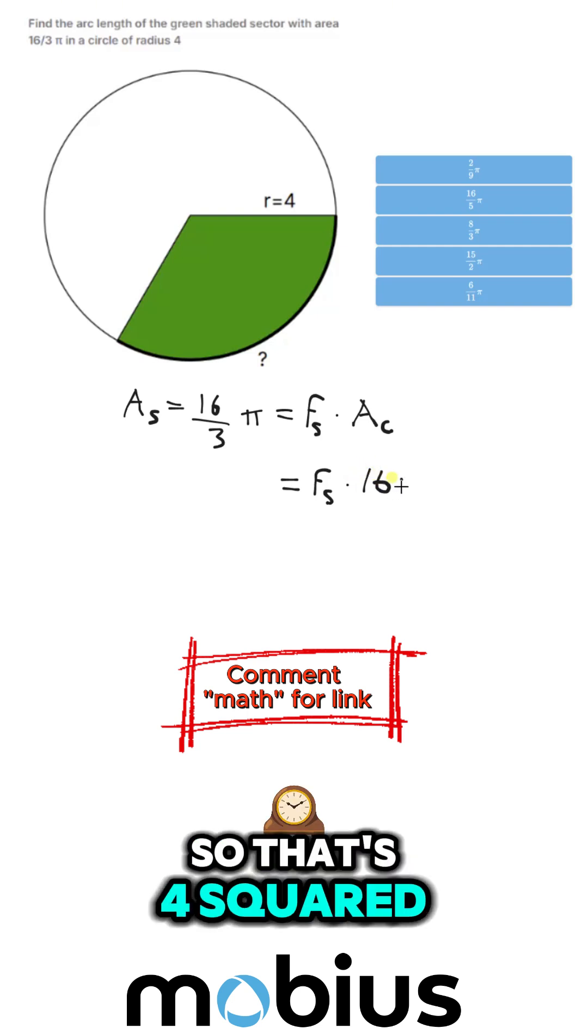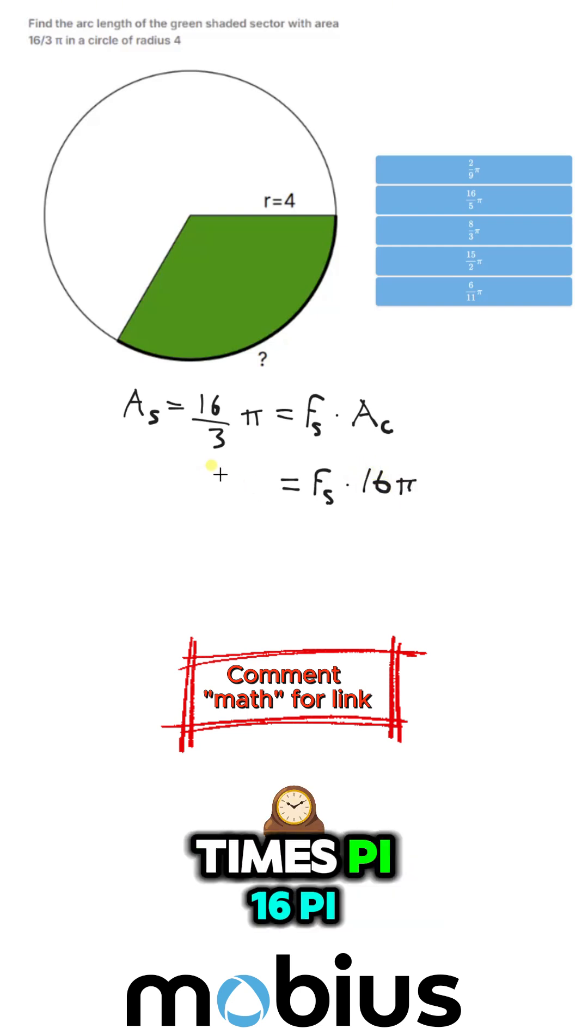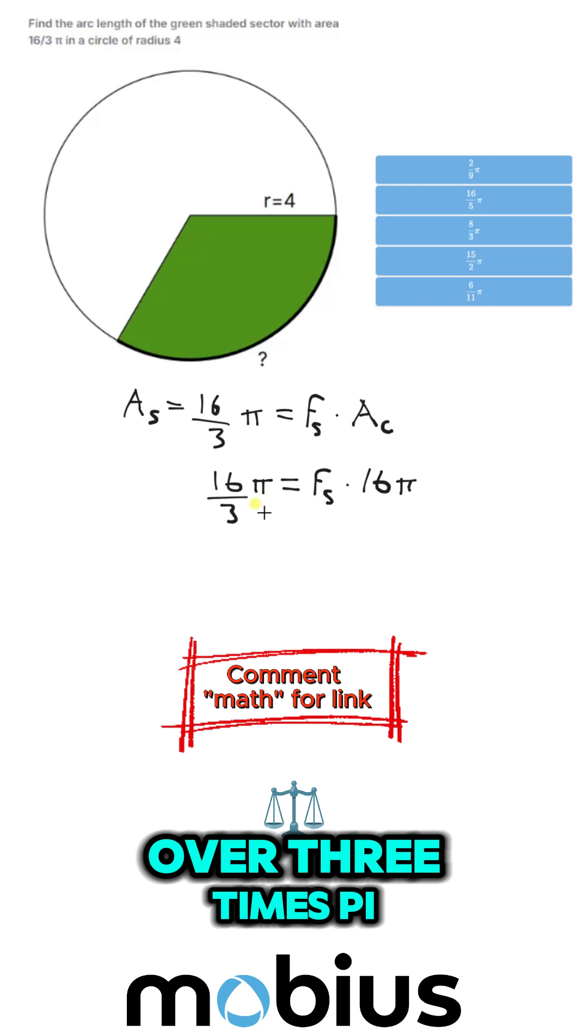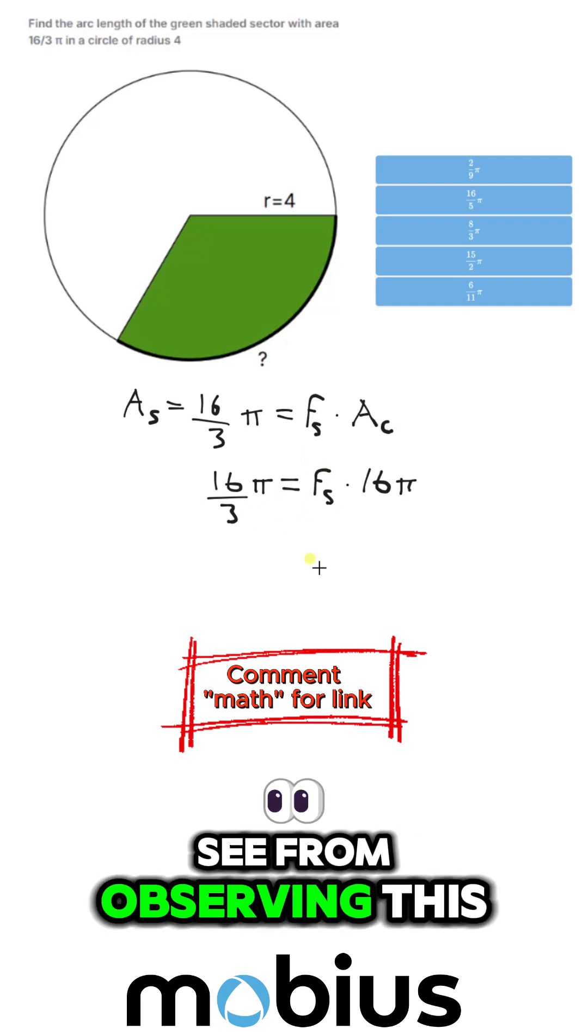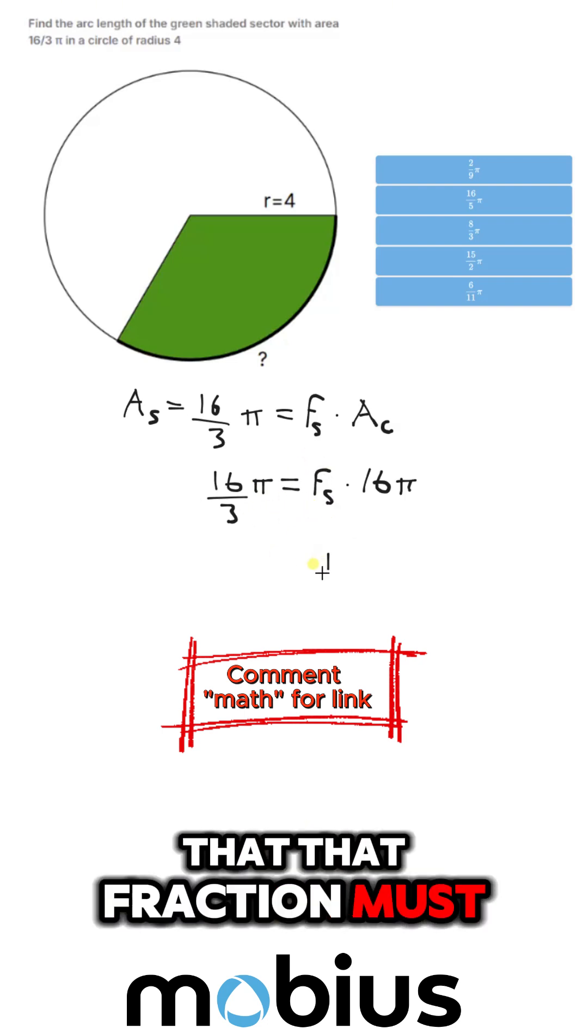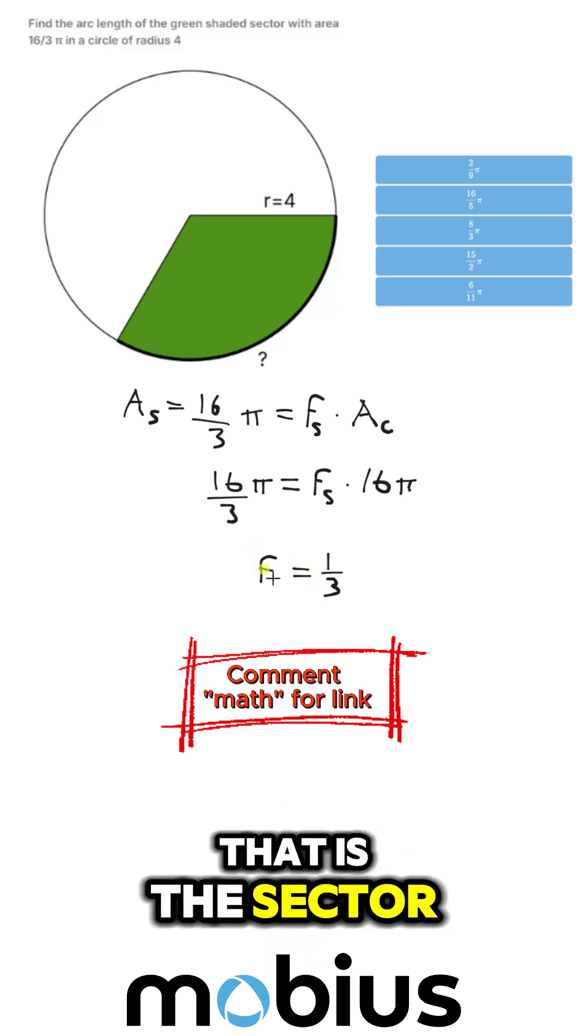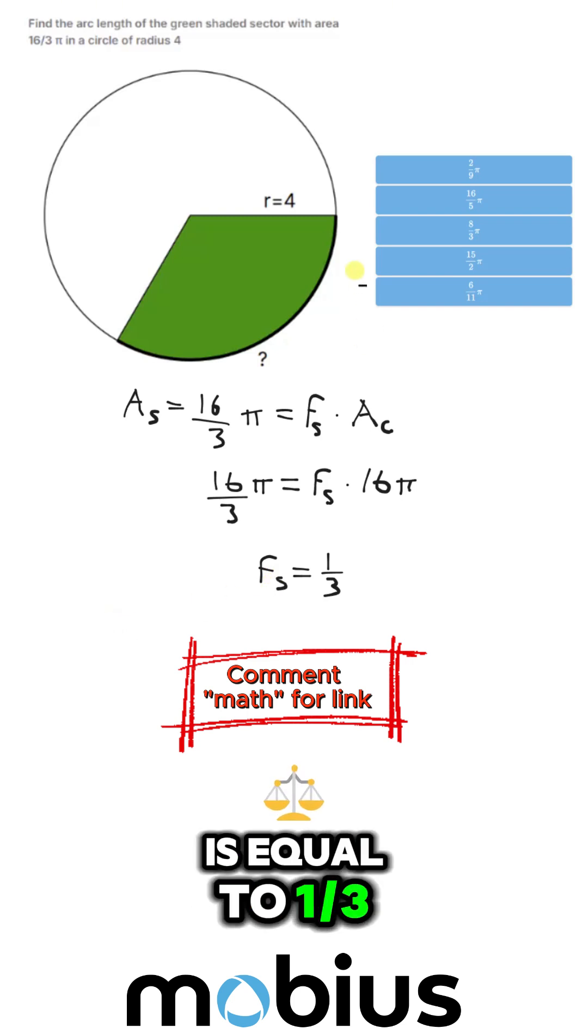So that's 4 squared times pi, 16 pi. And that equals 16 over 3 times pi. So we can just see from observing this that that fraction must equal 1 third. So the fraction of our circle that is the sector is equal to 1 third.